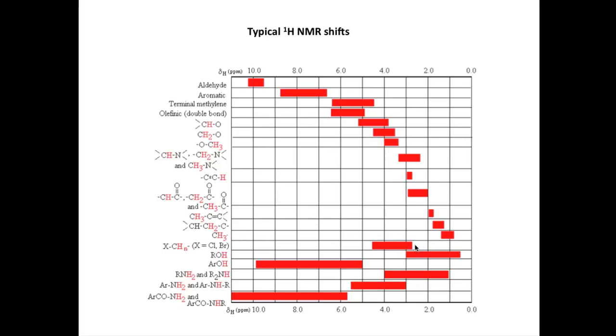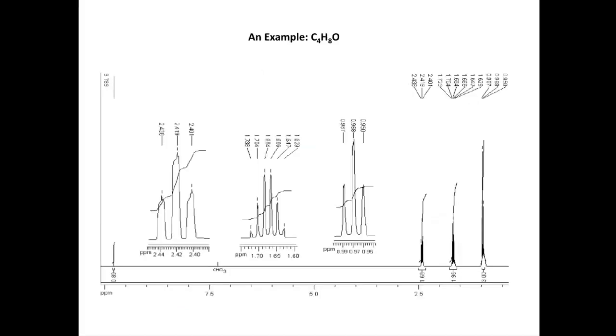You'll notice that when we have OH and NH hydrogens, we have variable chemical shifts. So let's now have a look at this particular example. And we know the molecule has the formula C4H8O. And so we just need to identify the structure of this unknown compound from the NMR spectrum.